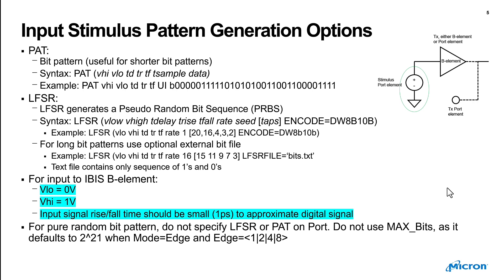For the stimulus, you can define a pattern source or LFSR to have a pseudo-random bit sequence. If this is an input to a B element, be sure you're using the proper voltage levels — zero and one — versus what you may have used in HSPICE with negative one and positive one. Remember, it's supposed to look like a digital signal, so you want very fast rising and falling times.